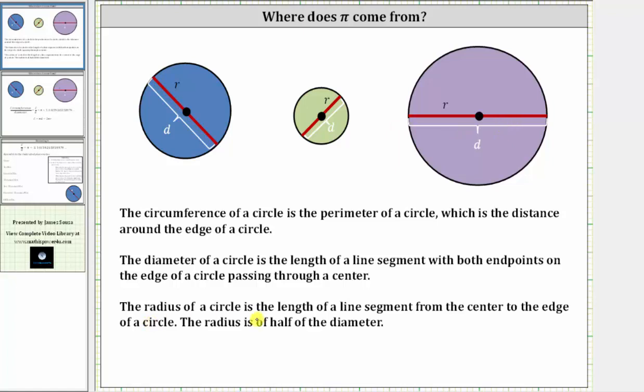And then finally, the radius of a circle is the length of a line segment from the center to the edge of the circle. The radius is half of the diameter.